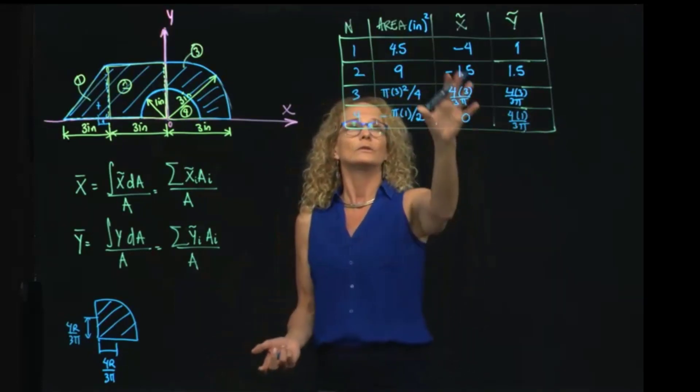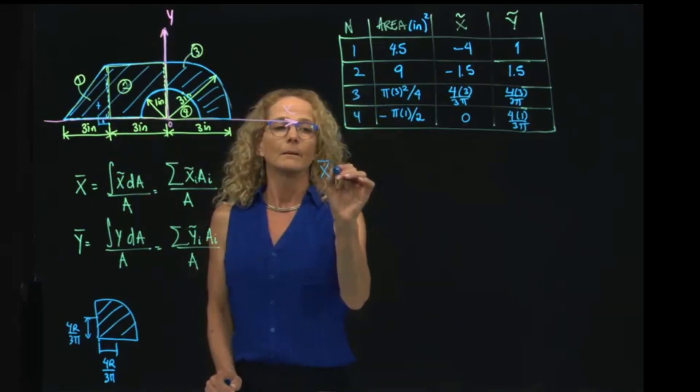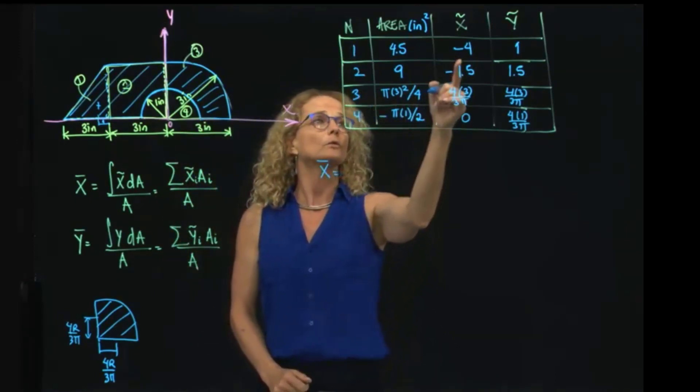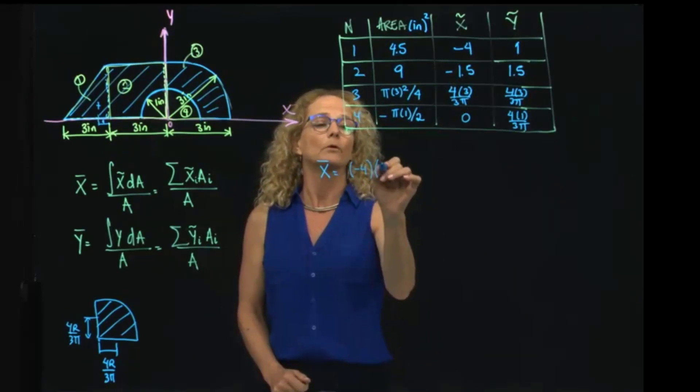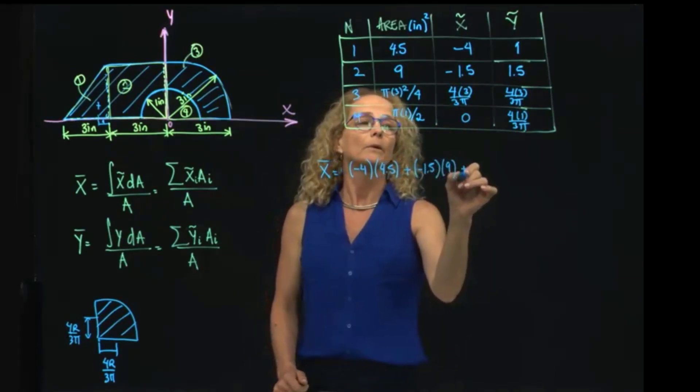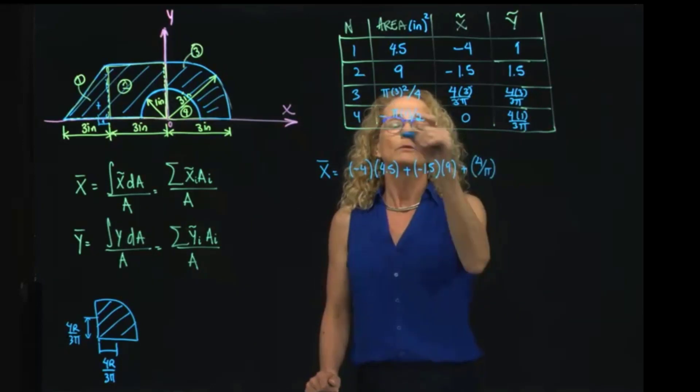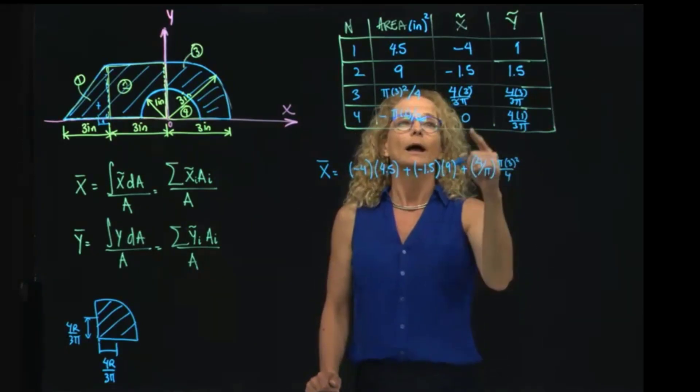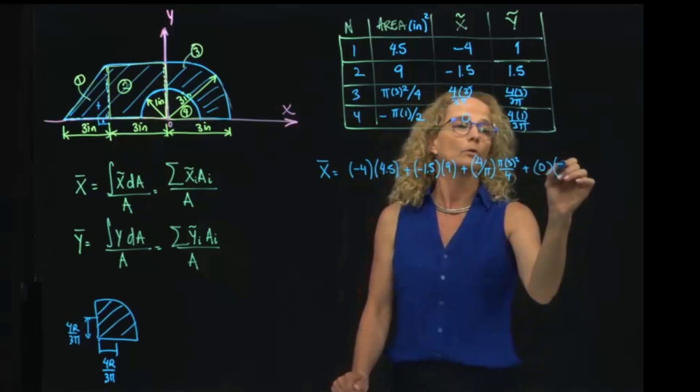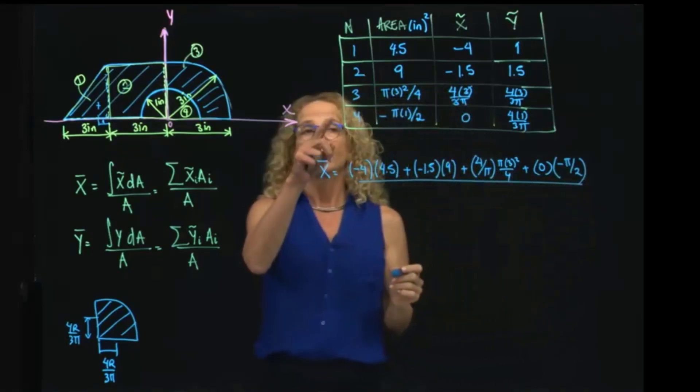Now that we have all the values in my tables, we can apply this formula. So let's apply these formulas, and then x will be equals to the summation of the 4, which is equals to: the first one will be negative 4 times 4.5 plus negative 1.5 times 9 plus 4, well this 3 goes with this 3, so I can write just 4 over π times π 3 squared over 4, and then I will write it even though it will give me 0, but it's just to make sure that we understand that we have to include all the values, so that will be 0, divided by the total area.